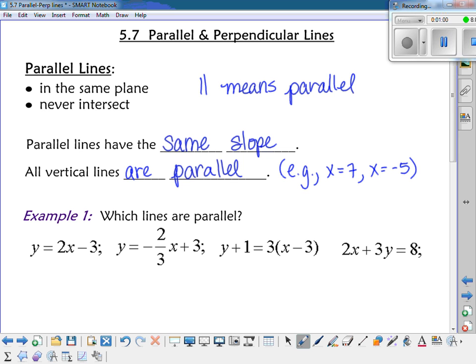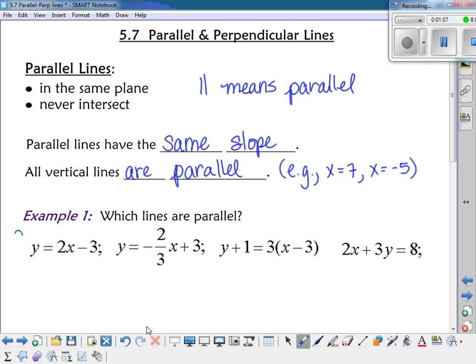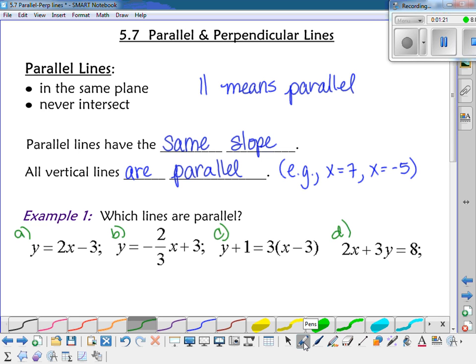So example 1 says which lines are parallel. So what you need to do is you need to go through and look at each one and figure out the slope. So I'm going to put letters by them because that will make it a little bit easier. So if I look at the line that's by A, what's the slope of that line? It's in y equals mx plus b form, so yeah, it's 2. Alright, so m equals 2 on that one.